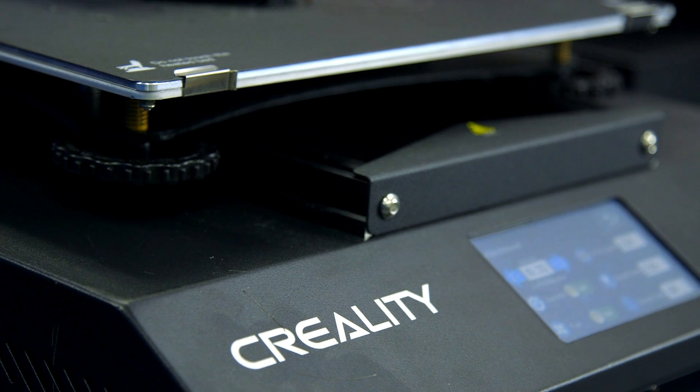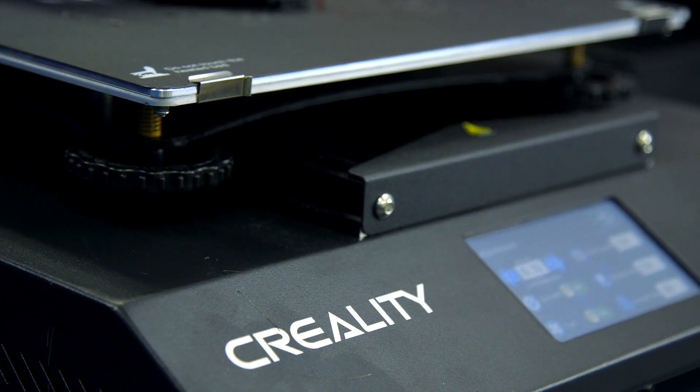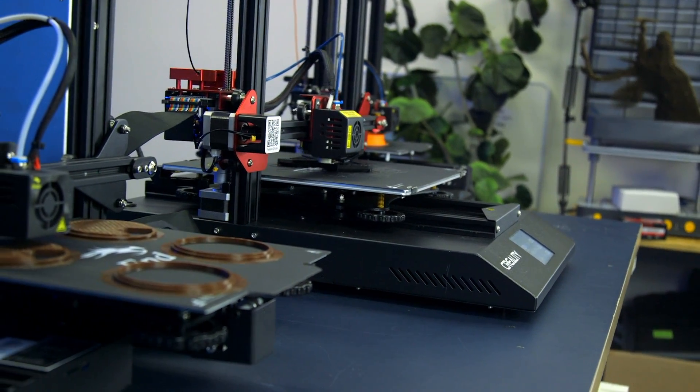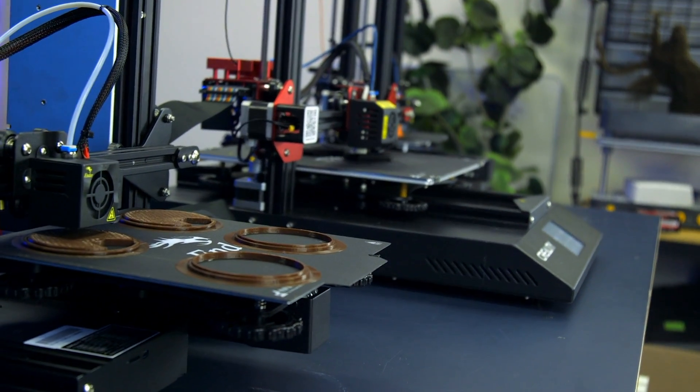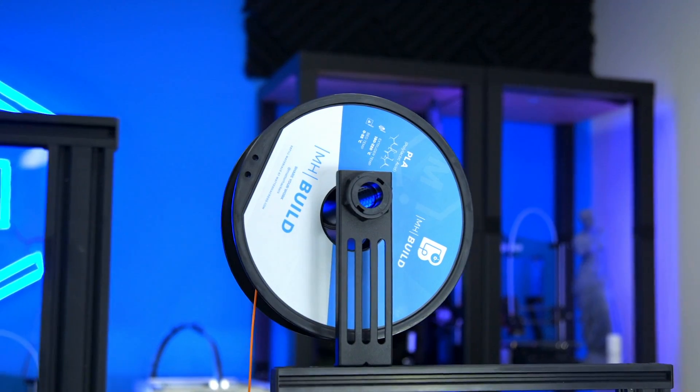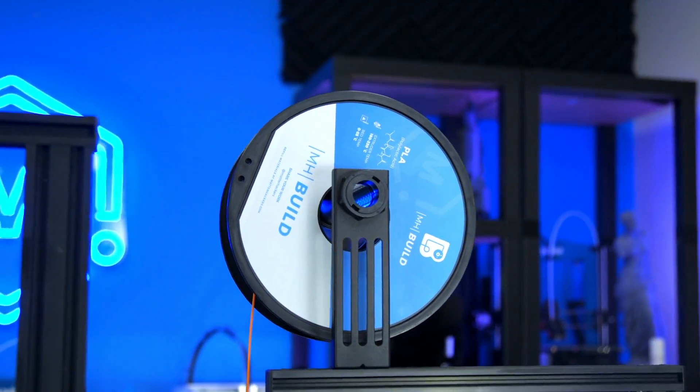You can get a dozen of these printers, set them all up, and with their huge build plates, it's really easy to set up one part in a whole grid across the bed and print out dozens of them at a time. And today we'll be doing just that, using these in a print farm sort of setting, and using our MHBuild filament to print out all these parts.